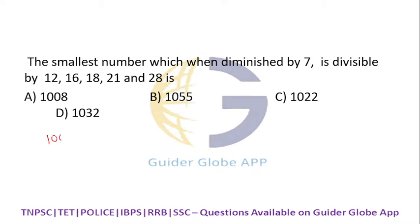That gives you 1001 as the first option. The second option is 1008, third option is 1015, and fourth option is 1032 — that is 1025. I told you in the previous problem how to take LCM. If you do it by that method and then add seven, you will get the answer. But what is the shortcut here? Go from the options — from 1008, subtract seven.